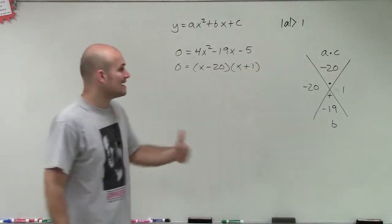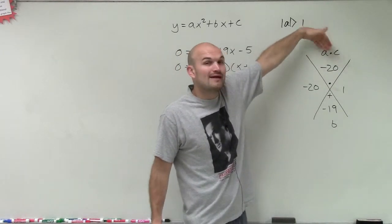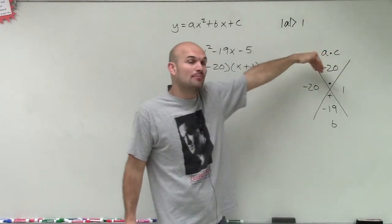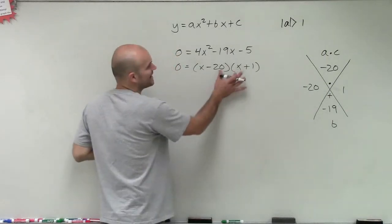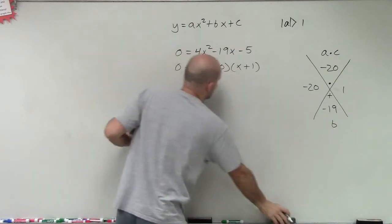But that is incorrect. That is true when we just have C or when A is equal to 1. But when A is greater than 1, we have to go a couple extra steps. This is not the factored form. You can apply the distributive property to see that it's not going to work.